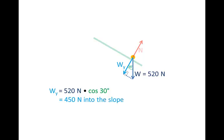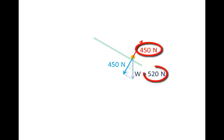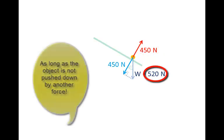We must also give the direction: perpendicularly into the slope. That's the force that the normal force balances, so the normal force's magnitude must also be 450 newtons, and it acts perpendicular to the slope, upwards. Normal force always acts perpendicular to the slope upwards. Notice that the normal force the surface exerts is now less than the weight of the object, and that's always the case on an inclined plane.